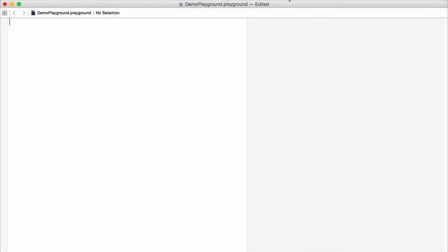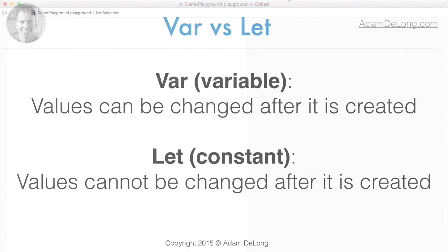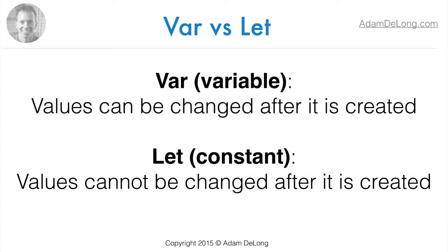We're going to talk about the differences between var versus let in Swift. Let's start by defining their terms. A var means variable, which means we can change the value of it after it's been created. Let is a constant, which means its value can't be changed after it's been created.